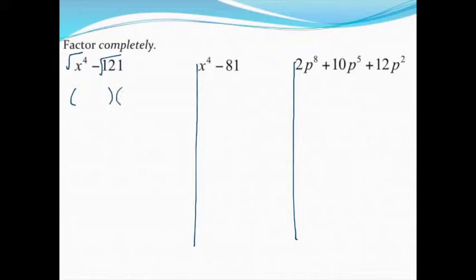With difference of two squares, we get two parentheses and then it comes down to square root. The square root of x to the fourth is x squared, so that's in the front spot. The square root of 121 is just 11, so that goes in the back. The only difference is that one parentheses is plus and one is minus.